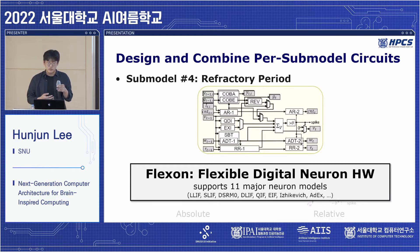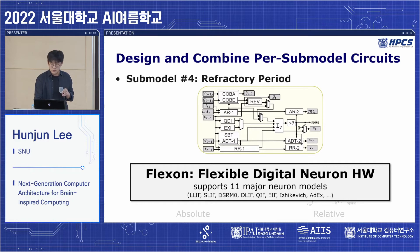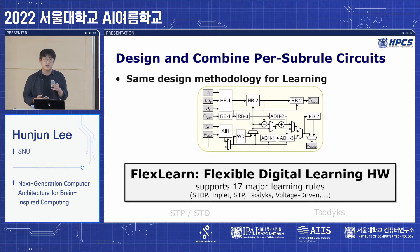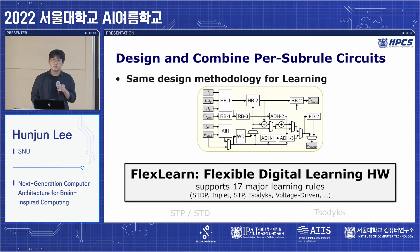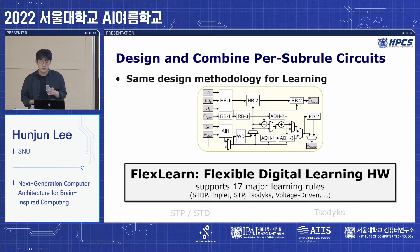The final design, FlexZone, is a flexible digital neuron hardware that can be reconfigured according to the target neuron model, supporting 11 major neuron models widely adopted in neuroscience. Following the same design methodology but identifying subrules instead of submodels, FlexLearn is capable of simulating 17 major learning rules widely adopted in neuroscience.